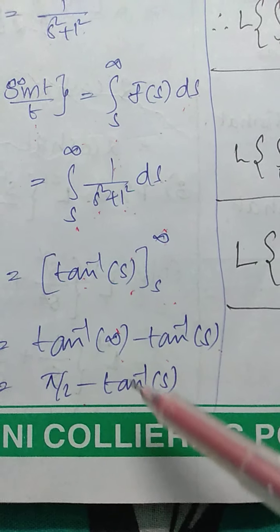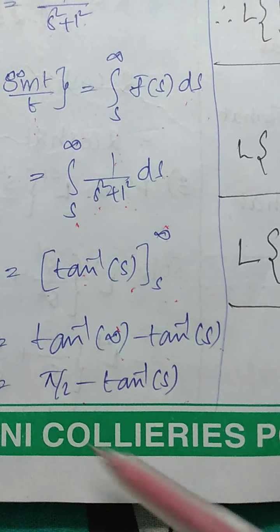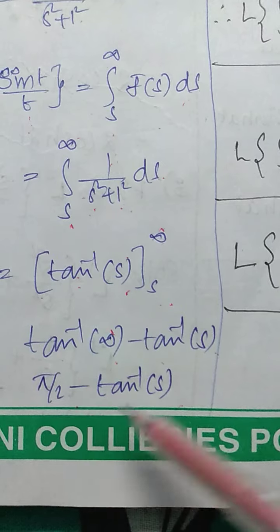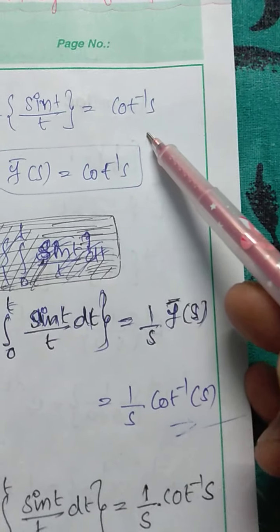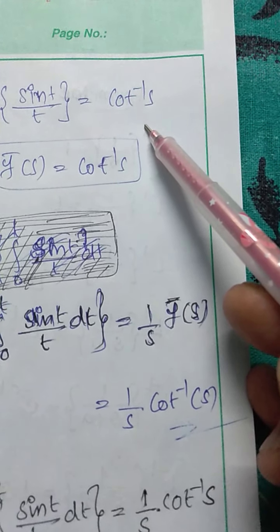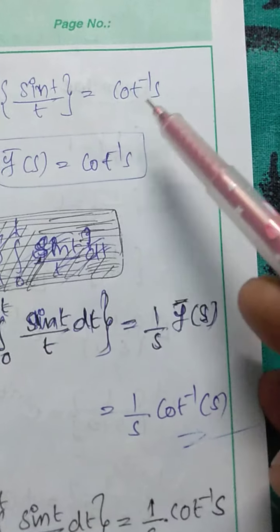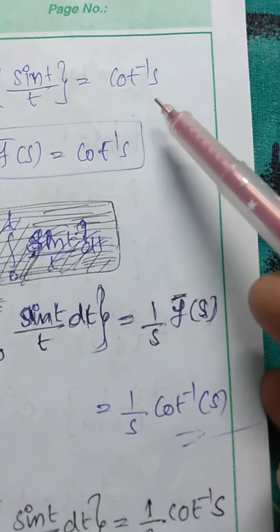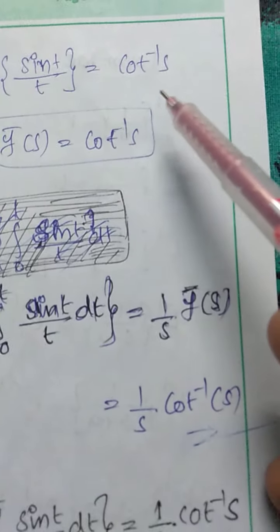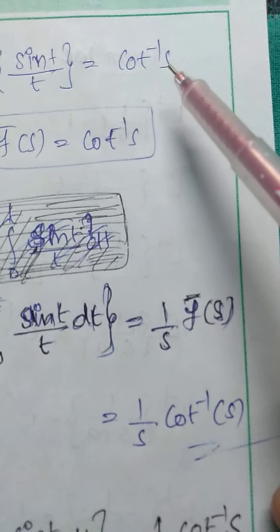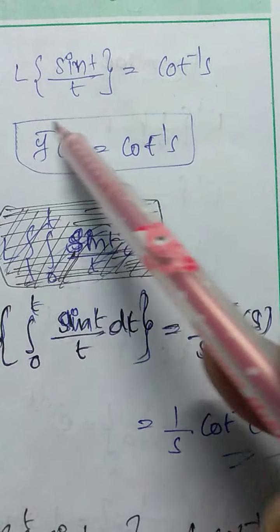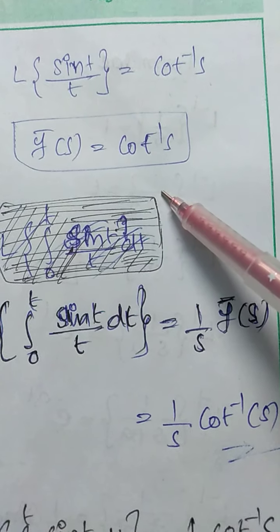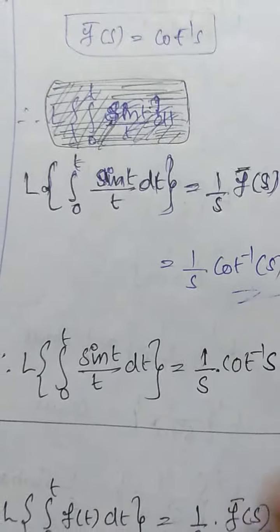Now, π/2 − tan⁻¹(s) equals cot⁻¹(s), because tan⁻¹(s) + cot⁻¹(s) = π/2. Therefore, the Laplace transform of sin t / t is F̄(s) = cot⁻¹(s).